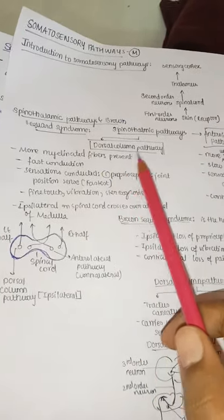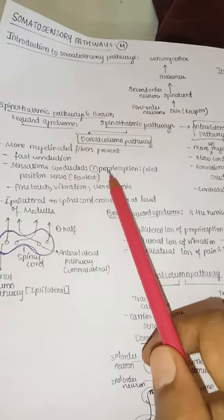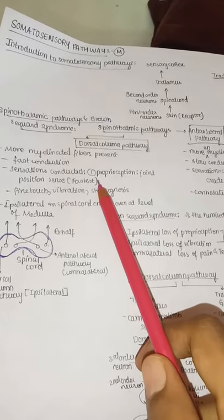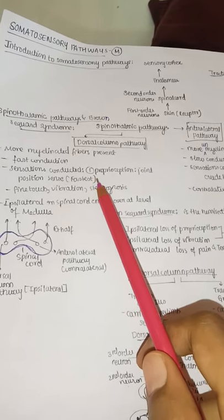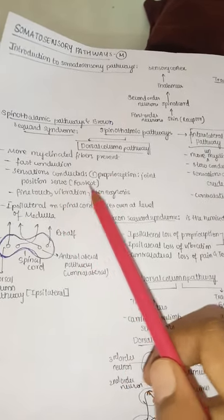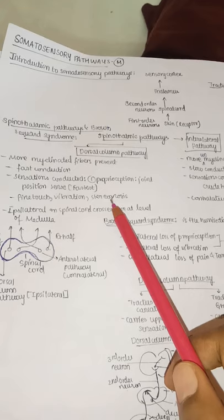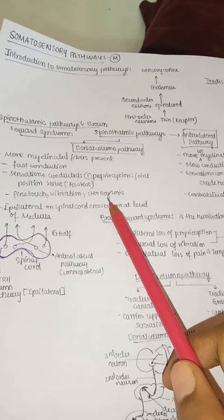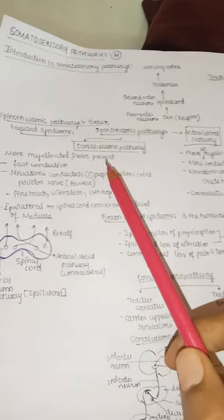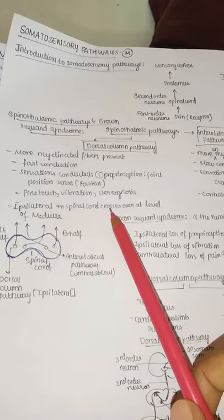The dorsal column pathway contains more myelinated fibers — fast conduction. Sensations conveyed are proprioception (joint position sense), fine touch, vibrations, and stereognosis (knowing body part position without vision). This pathway is ipsilateral in the spinal cord but crosses over at the level of the medulla to the opposite side.